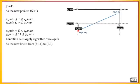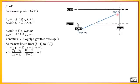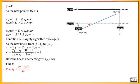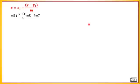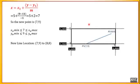Now the new line is from (5, 11) to (8, 8). So x1 = 5, y1 = 11, x2 = 8, y2 = 8, and m = −1 as before. The line is now intersecting with y_w_maximum (which is 9). We identify x: x = x1 + (y − y1) / m = 5 + (9 − 11) / (−1) = 7. The new point is (7, 9). Checking the condition: (7, 9) satisfies both conditions. So the new clipped line is from (7, 9) to (8, 8).